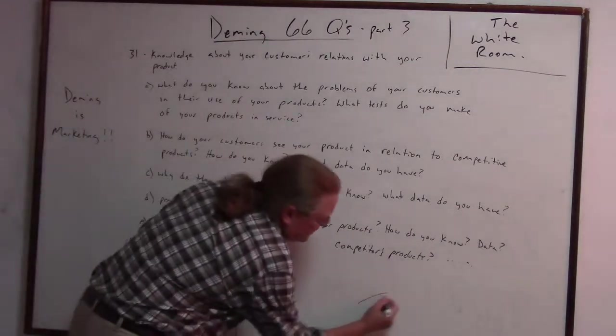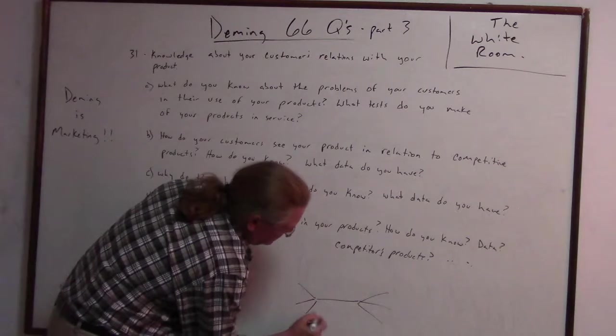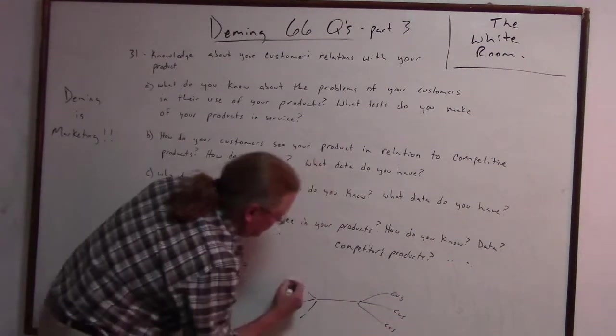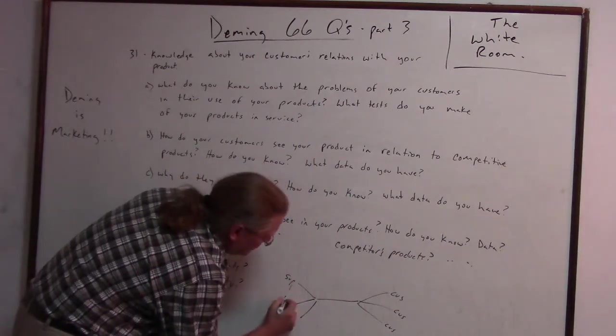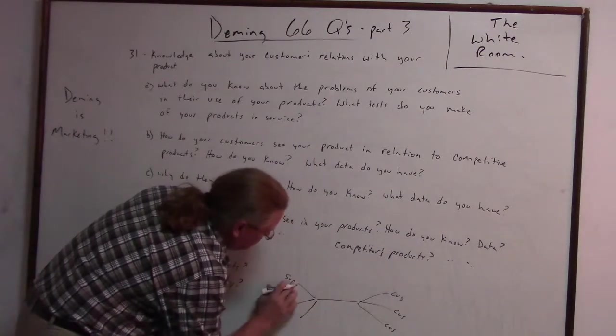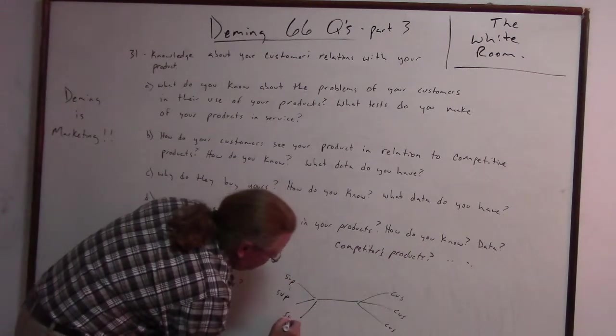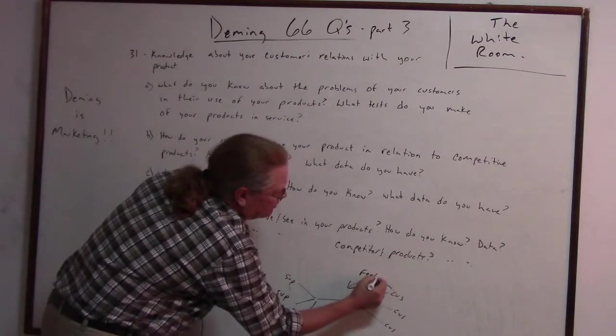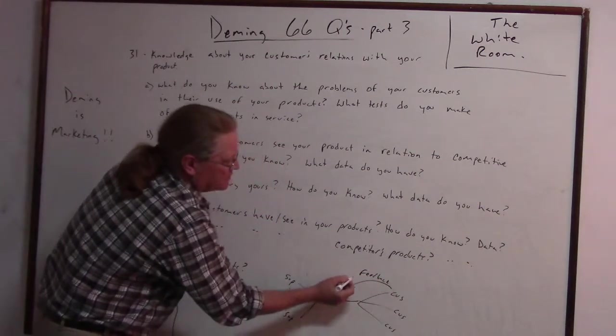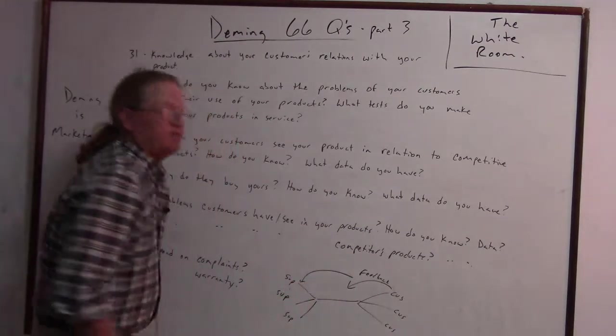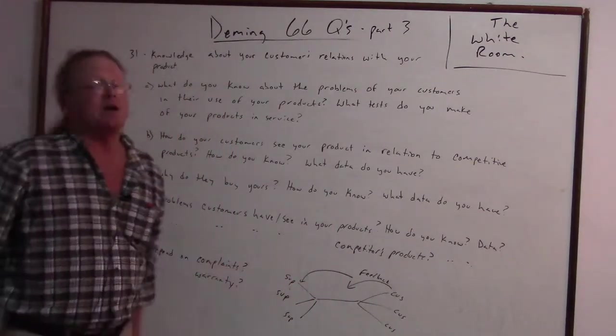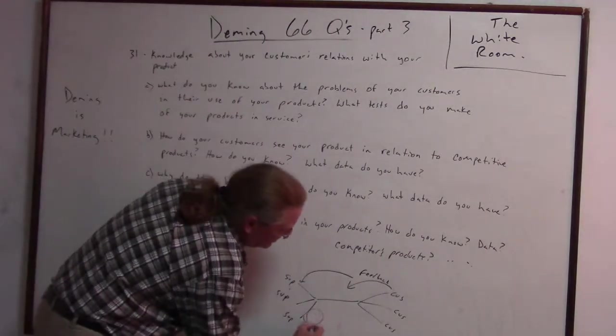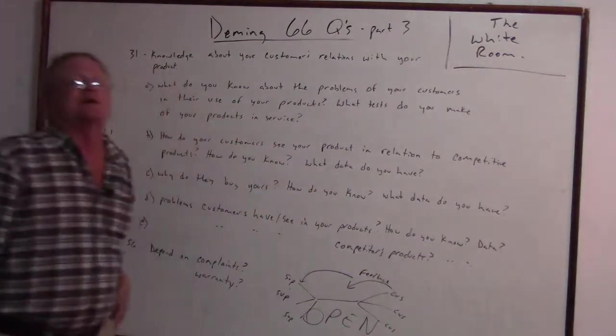You've seen that little sketch that Deming did for the Japanese, where we have the customers over here, the suppliers over here, and then our operation. How important it is to get feedback from the customers - that was his message to the Japanese. If it involves the suppliers, they need to get that information too, so we all operate in an open system where we're communicating with the customer.